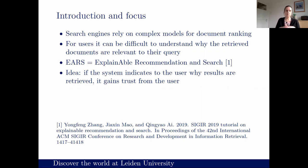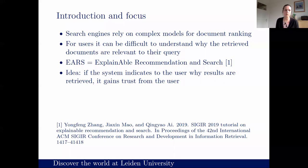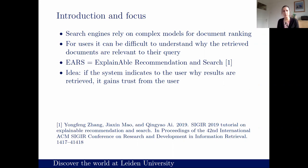As you know, many of you have been working in recent years with neural models, either in NLP or IR. Although these models can be very effective — though not always more effective than simple models, as we will see — it's more difficult for users to understand what's going on. The more complex the model, the harder it is to understand. The idea of explainable AI and explainable IR is that if the system can indicate why results were considered relevant, users gain more trust and it helps them make the right decisions, such as which documents to open.